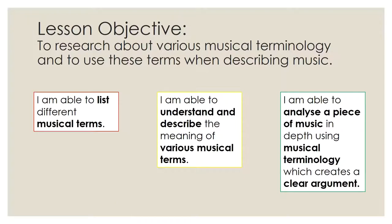For today's lesson, the objective is to research various musical terminology and to use these terms when describing music. At the very least, I'm expecting you to be able to list different musical terms. Once you can do that, you should be able to understand and describe the meaning of these terms. And in the green box on the right, once you've done the two boxes before, you should be able to analyze a piece of music in depth using the musical terminology we've been looking over, which will create a clear argument for what you're trying to say about a song.